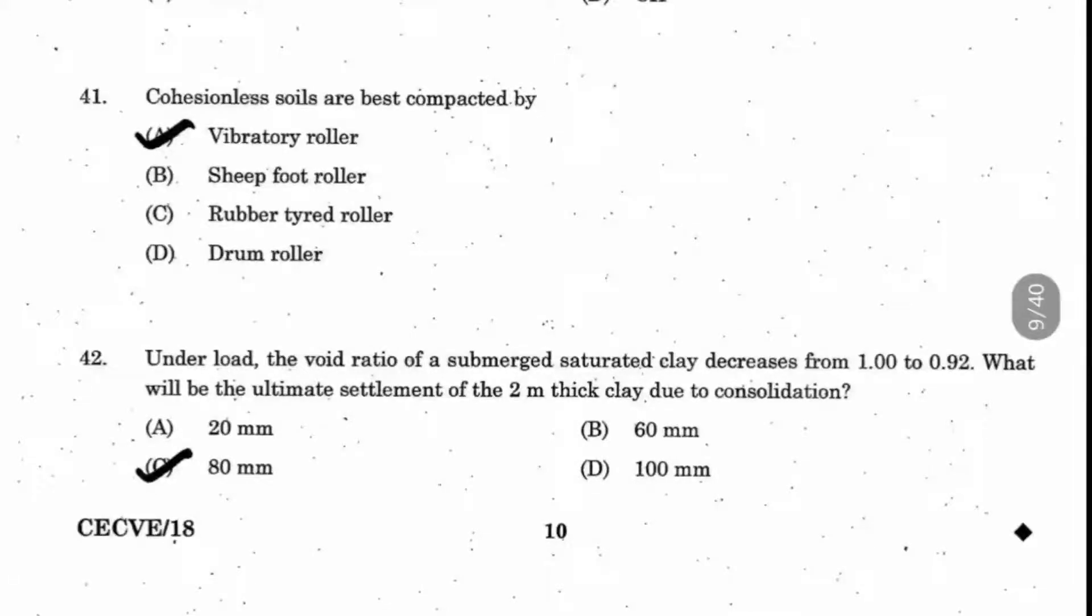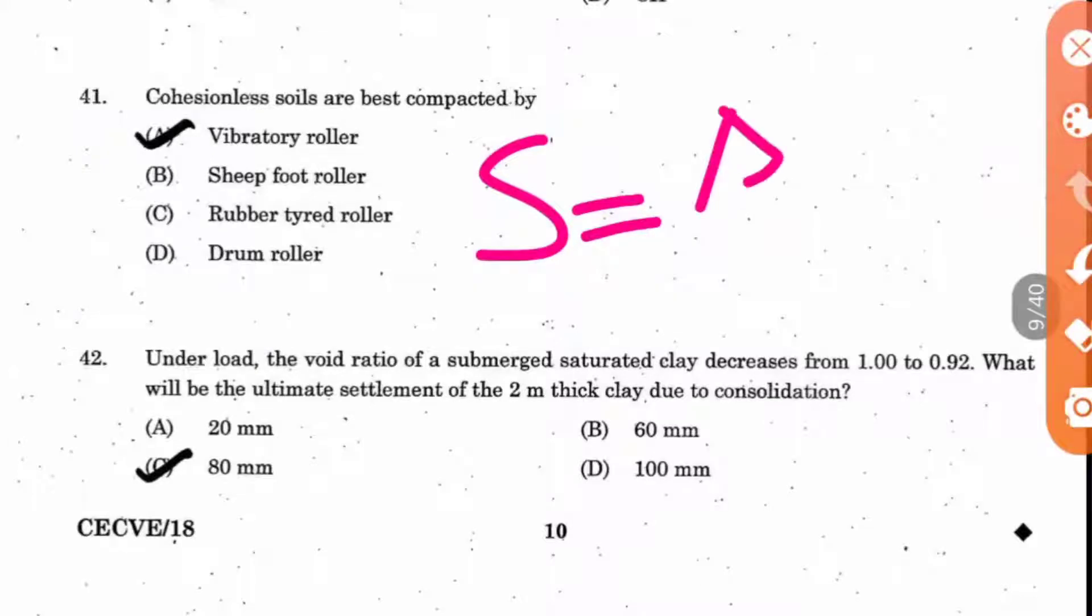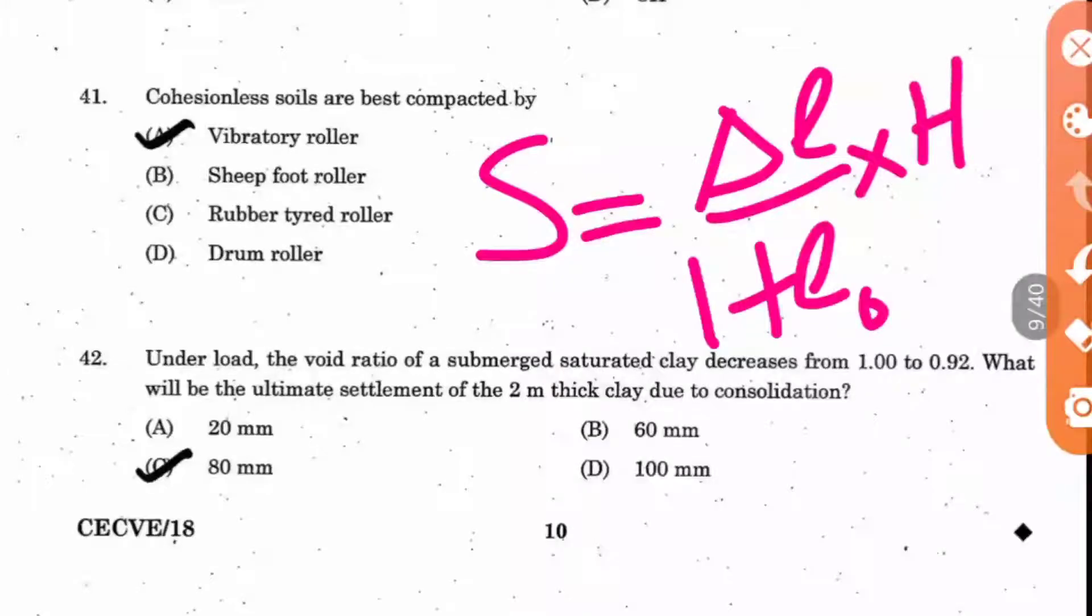Question number 42: Under load, the void ratio of a submerged saturated clay decreases from 1 to 0.92. What will be the ultimate settlement of the 2 meter thick clay due to consolidation? The settlement formula with respect to void ratio is: delta E divided by 1 plus E0 into H. The difference between the void ratios is the del E.